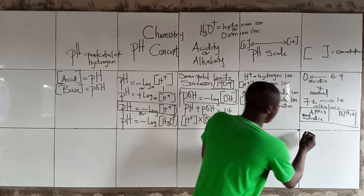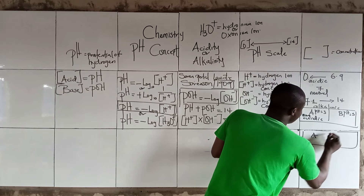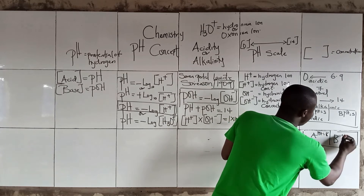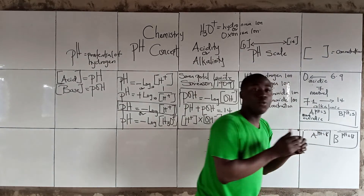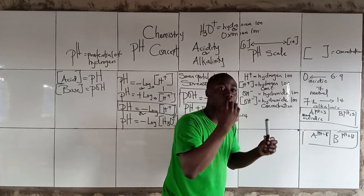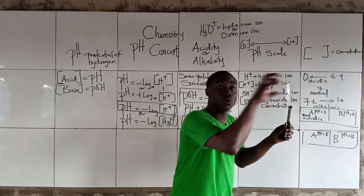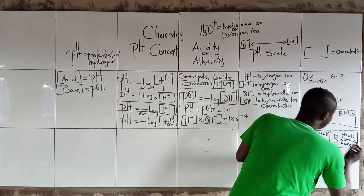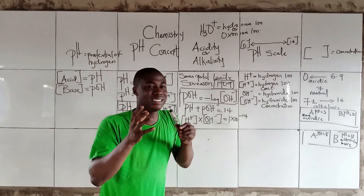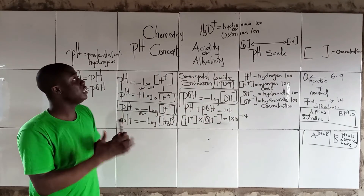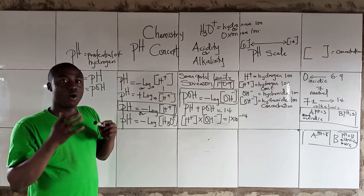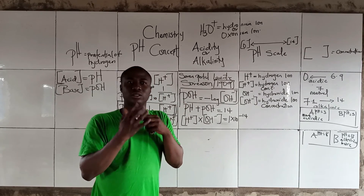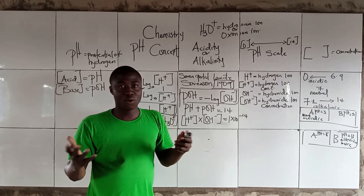Now, if Solution A has a pH of 8 and Solution B has a pH of 13, which is more alkaline? Solution B with pH 13 is more alkaline, because you are moving towards 14 on the scale. These are the first concepts to understand about pH. In subsequent videos, I will explain calculations on the pH concept. Thanks for watching.